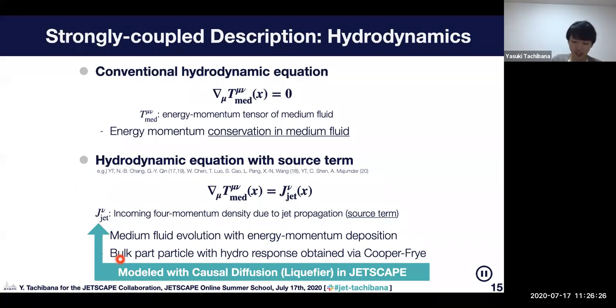This J is modeled with causal diffusion liquefier module in JetScape. Next, I'd like to explain how it's done. But before having it, I want to ask you, is this hydro description clear for you guys?